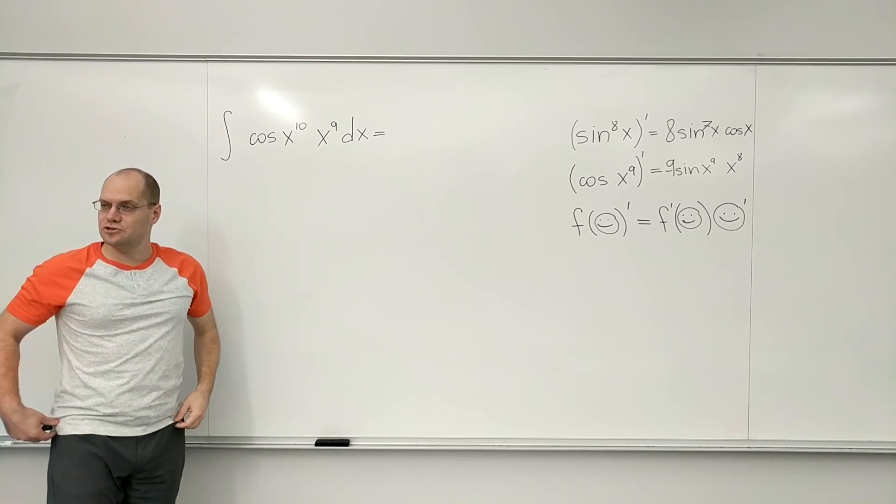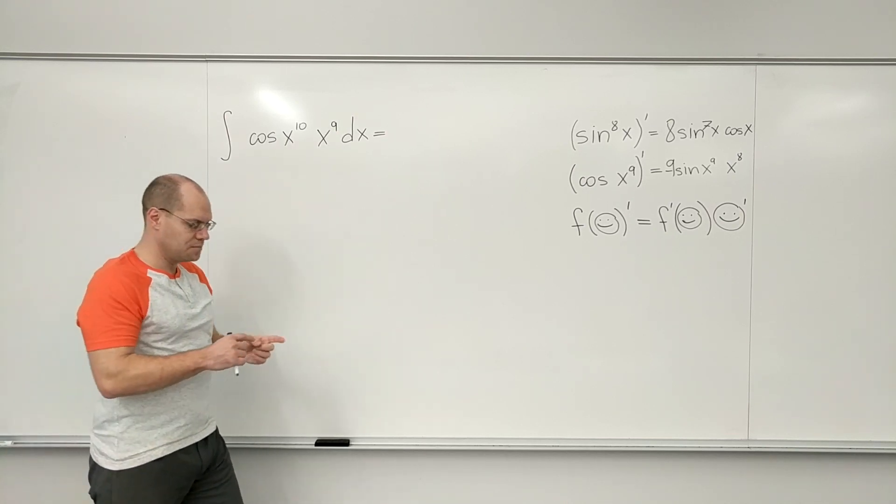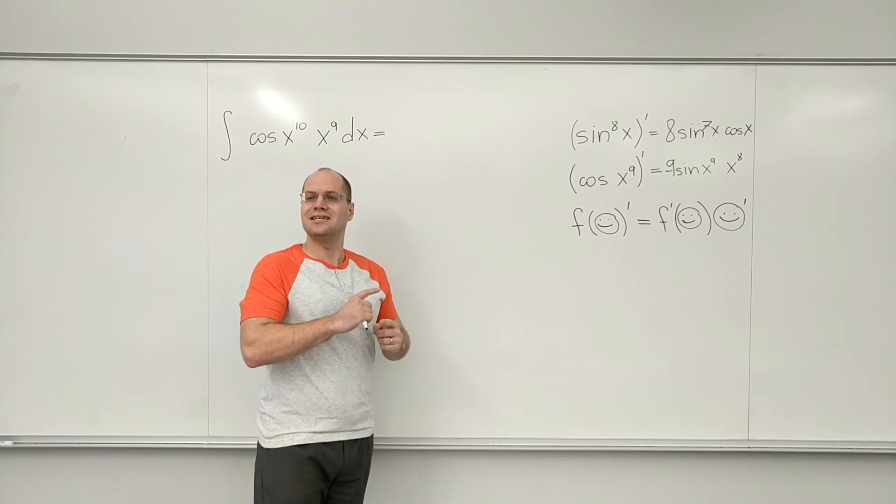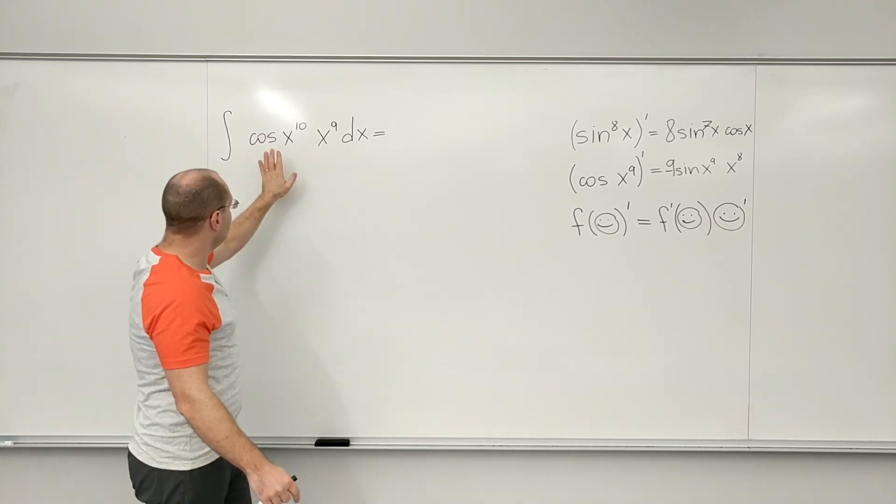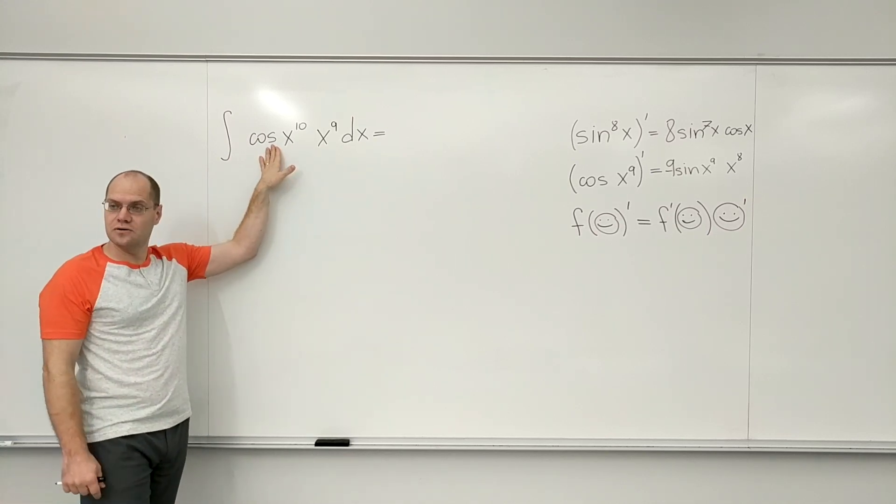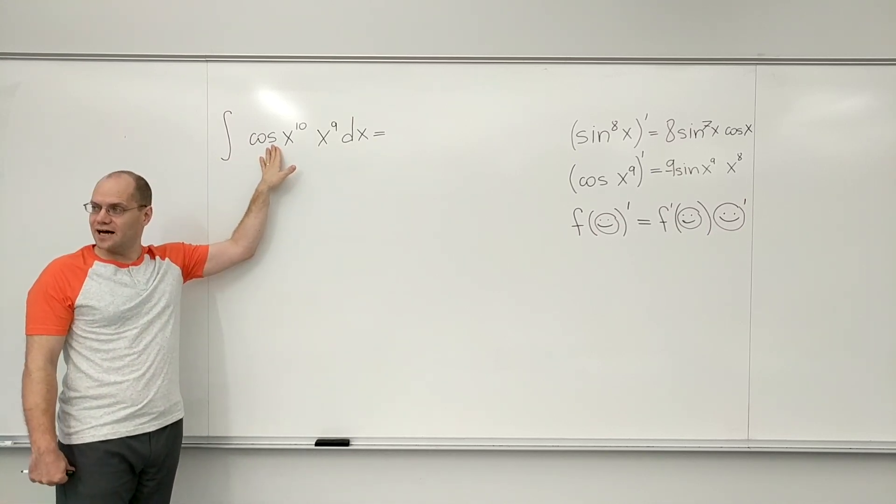You have to name what you're seeing with one word because that word will dictate what it is the derivative of. So here I'm looking at cosine. Oh, so it must be the derivative of sine.